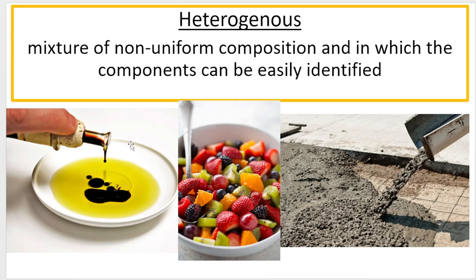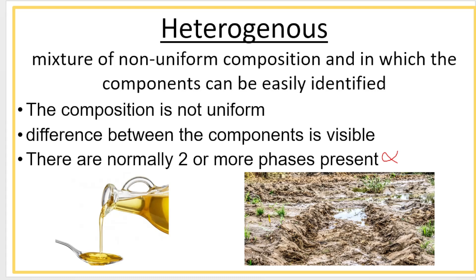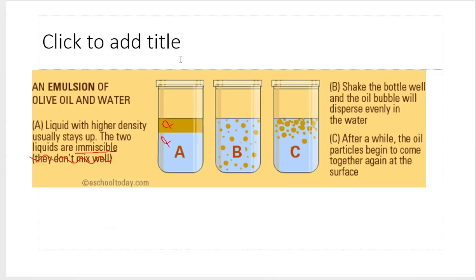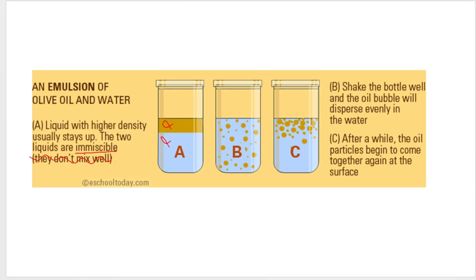A heterogeneous mixture is a mixture of non-uniform composition where you can easily tell the difference between the components — for example, oil in water, two different types of oils mixed together like salad dressing, a salad, or pizza. Muddy water is another example: you can see the water, the mud, the stones, the sand. Normally two or more phases are present. The oil-water example is what we call an emulsion — the liquid with higher density sits on top, and if you shake it up, you get bubbles that eventually make their way back to the surface and form a layer again.